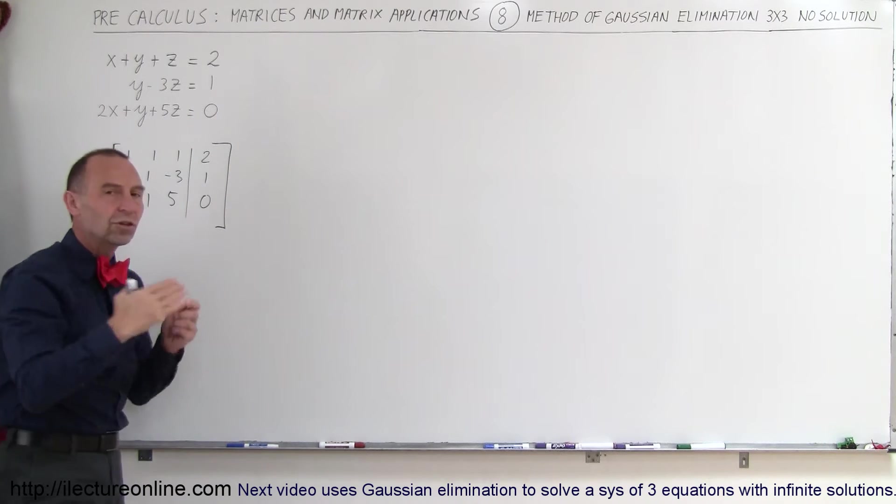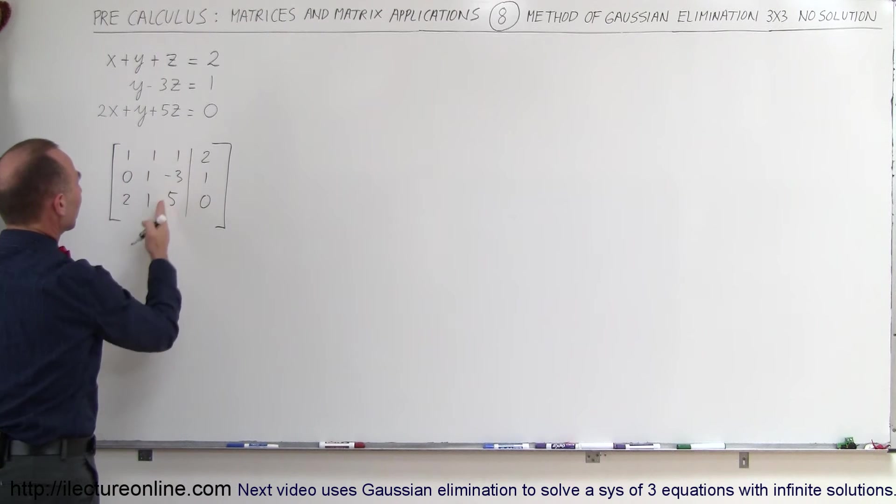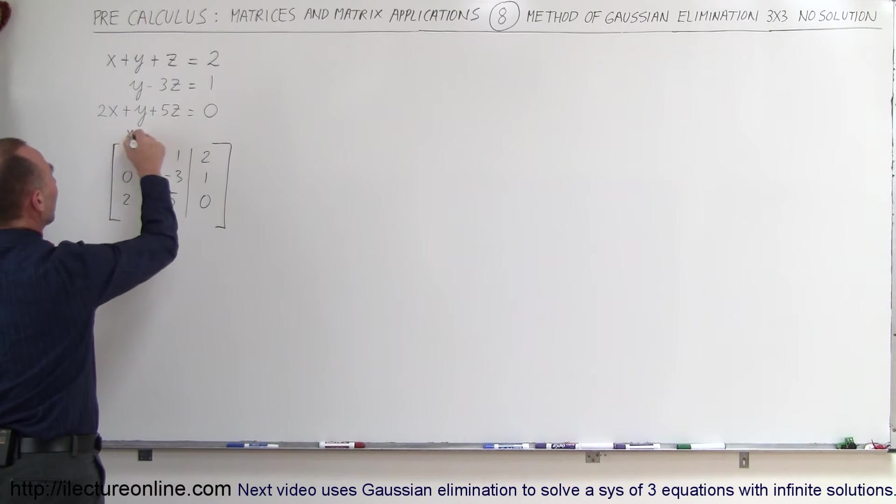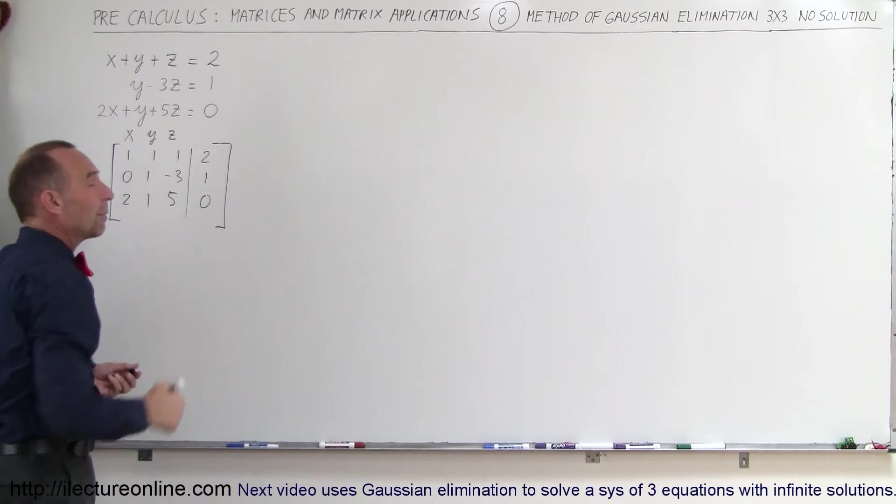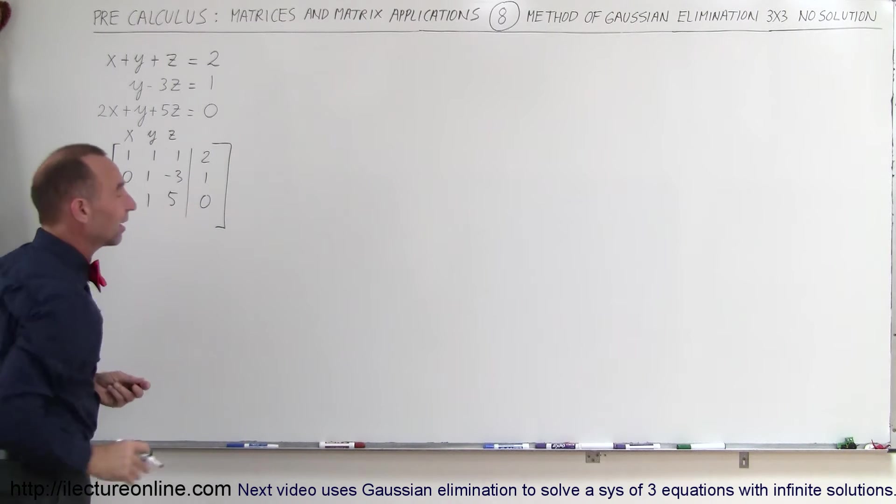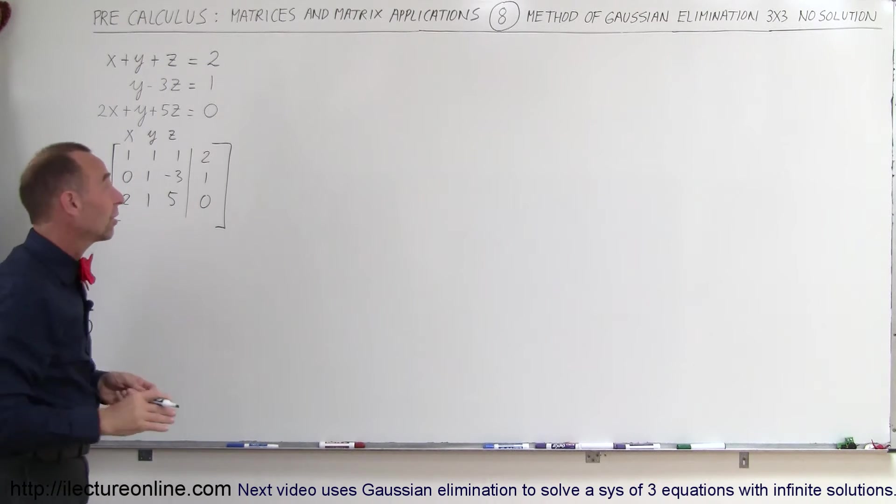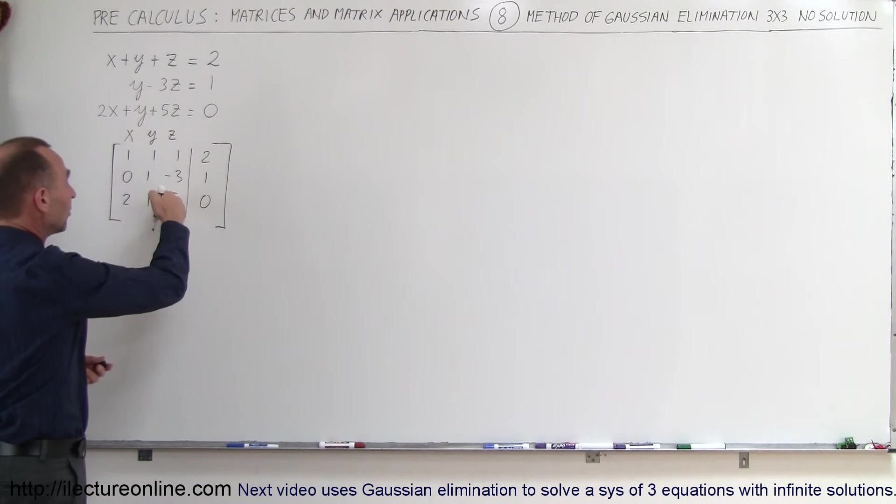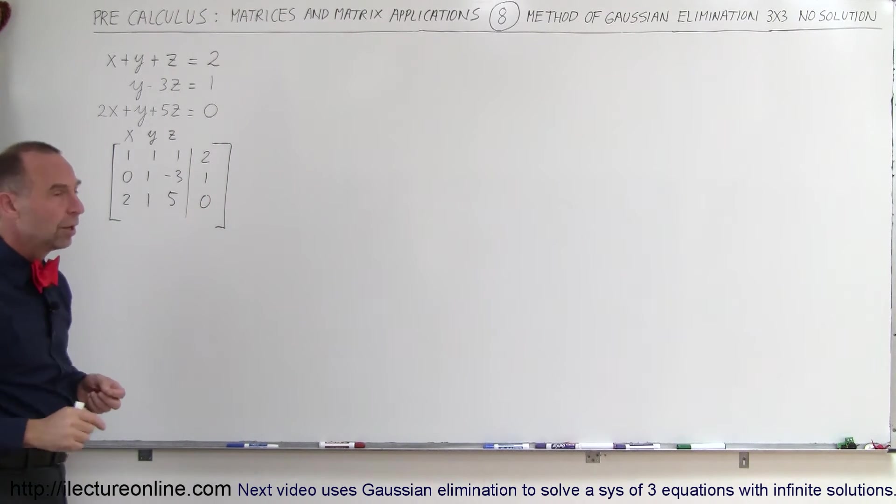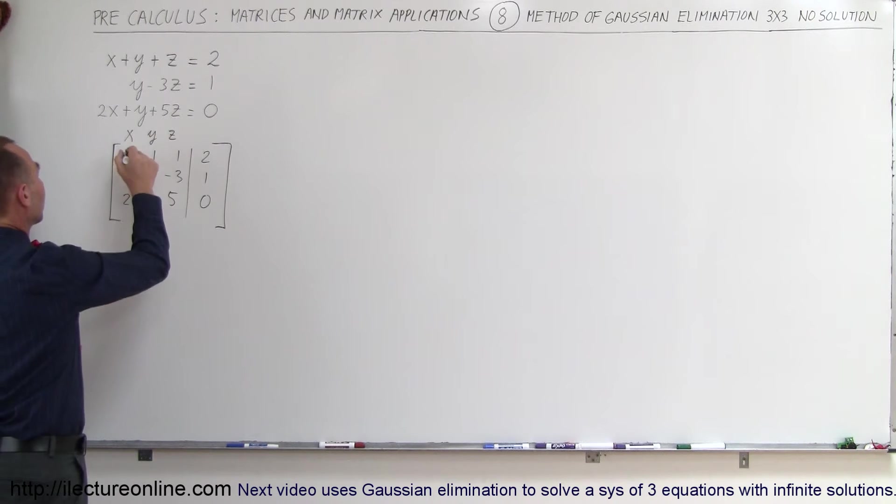I like to put a line there to delineate between the numbers that represent the coefficients for x, y, and z, and the column that represents the constants on the right side of the equal signs. Now what we're trying to do is we're trying to get 1s across the diagonal so that here we'll read the values for x, y, and z.